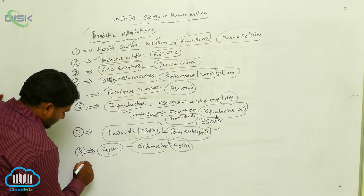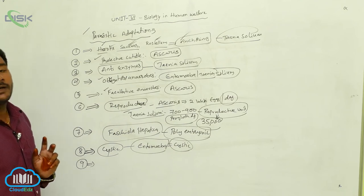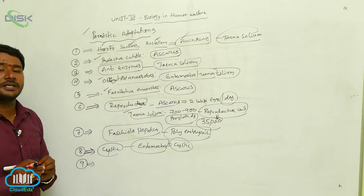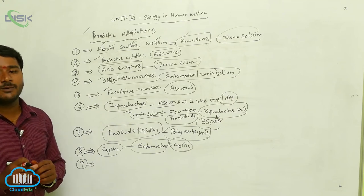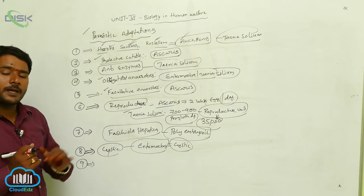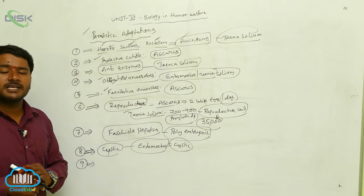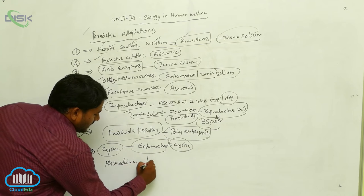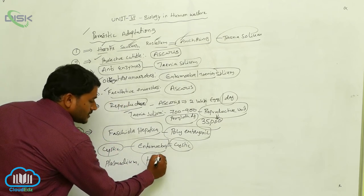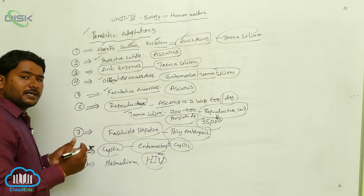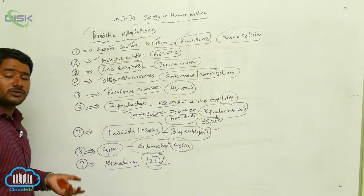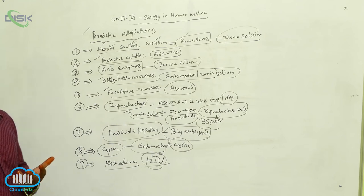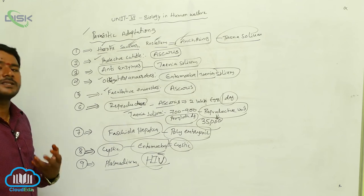Some parasites develop antigens against the host body's response and are not killed by vaccines because they constantly change their form. For example, we are not able to develop vaccines for Plasmodium and HIV. HIV continuously changes its form, and both Plasmodium and HIV produce antigens against the host immune response, making vaccine development impossible.